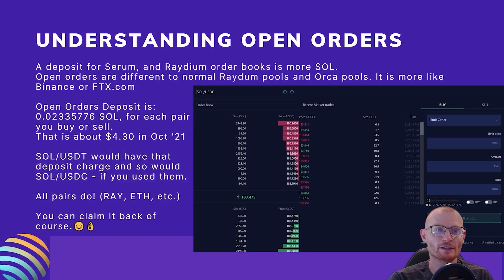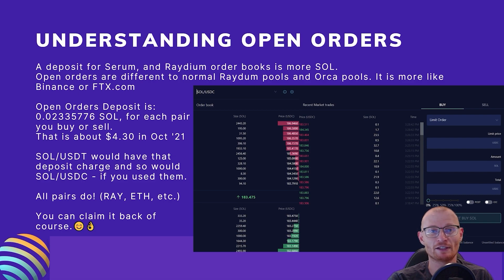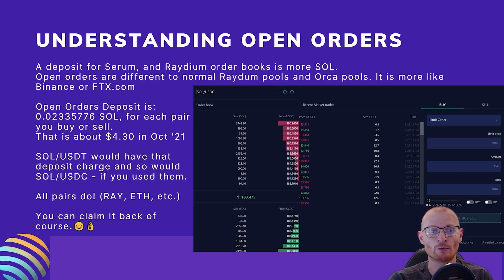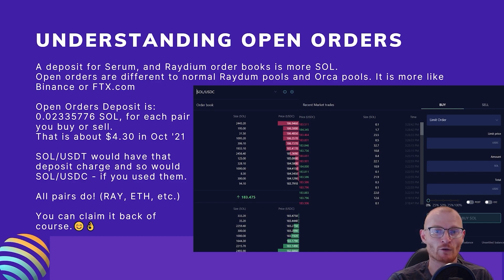Understanding Open Orders. A deposit for Serum and Radium order books is more. Open Orders are different to normal Radium Pools and Orca Pools — it is more like Binance or FTX.com. The Open Orders deposit is 0.02335776 SOL for each pair you buy or sell. That is about $4.30 in October 2021. As an example, SOL/USDT would have that deposit charge, and so would SOL/USDC if you use them. All pairs do — RAY, ETH, etc. And you can claim it back, of course.